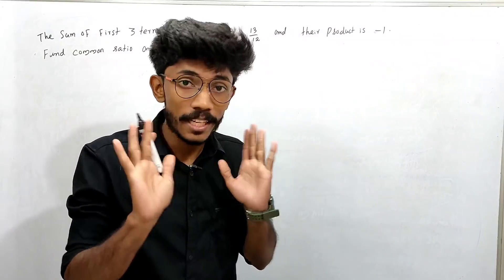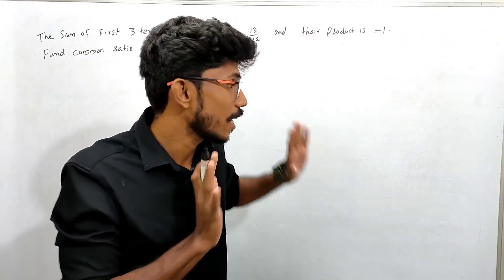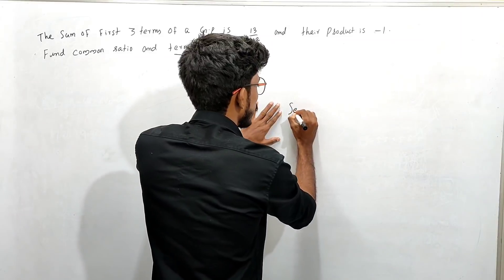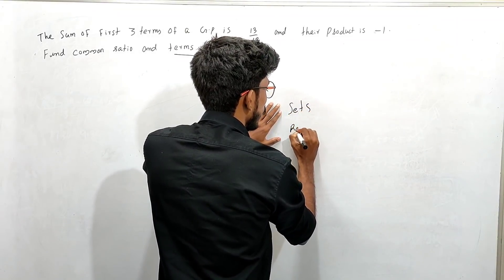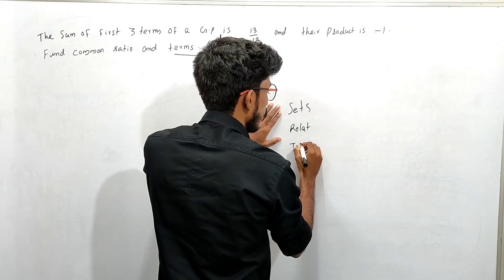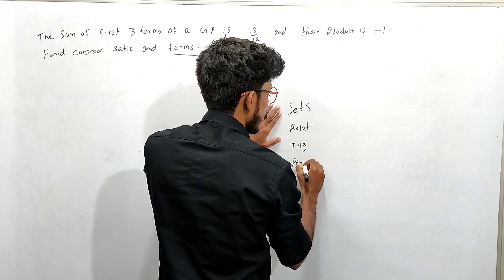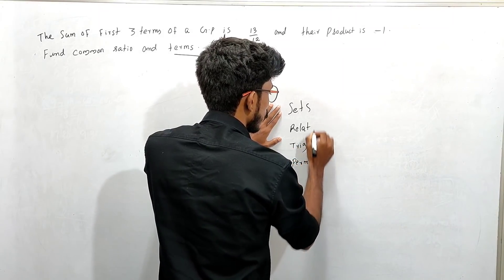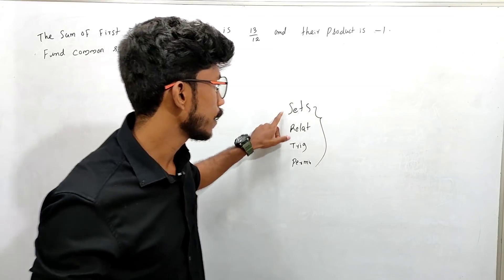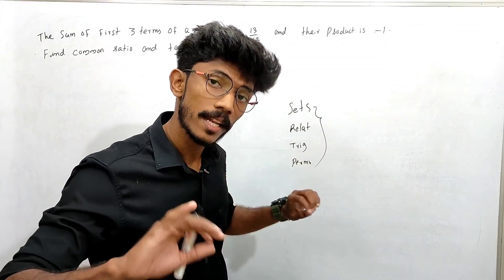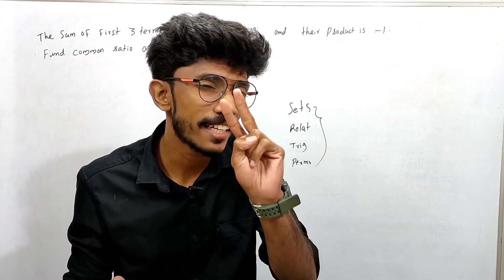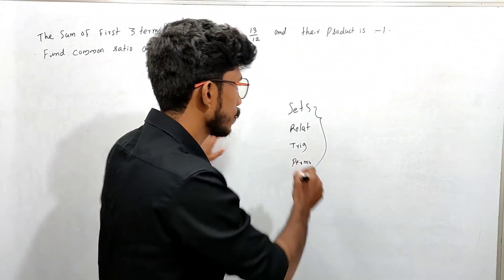First, in the next phase of the math exam, we have four chapters: sets, relational functions, trigonometry, and permutations. I'm going to finish these four chapters, and I'm going to upload all the other chapters in the next part.